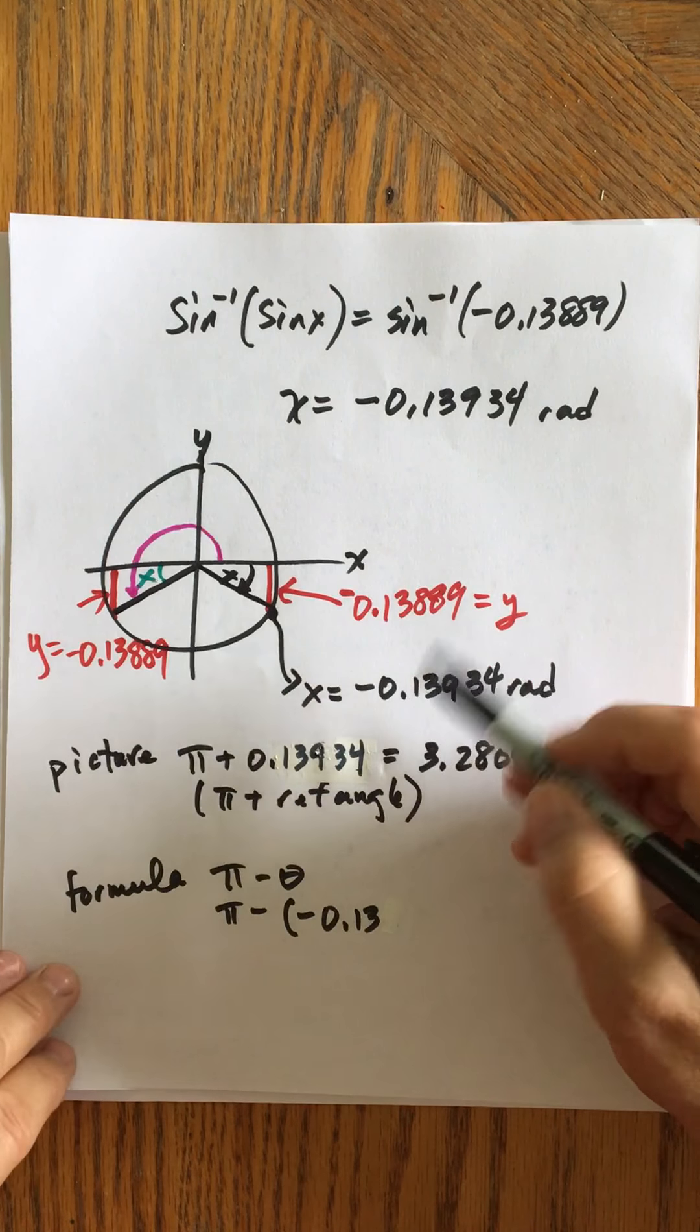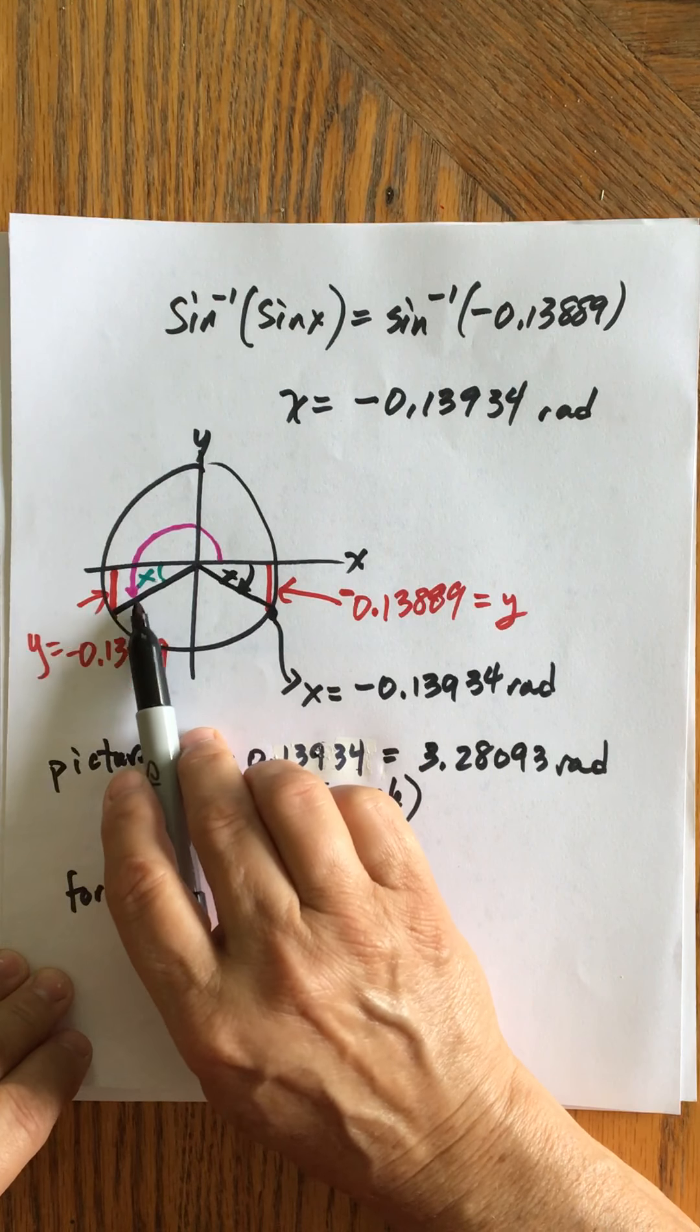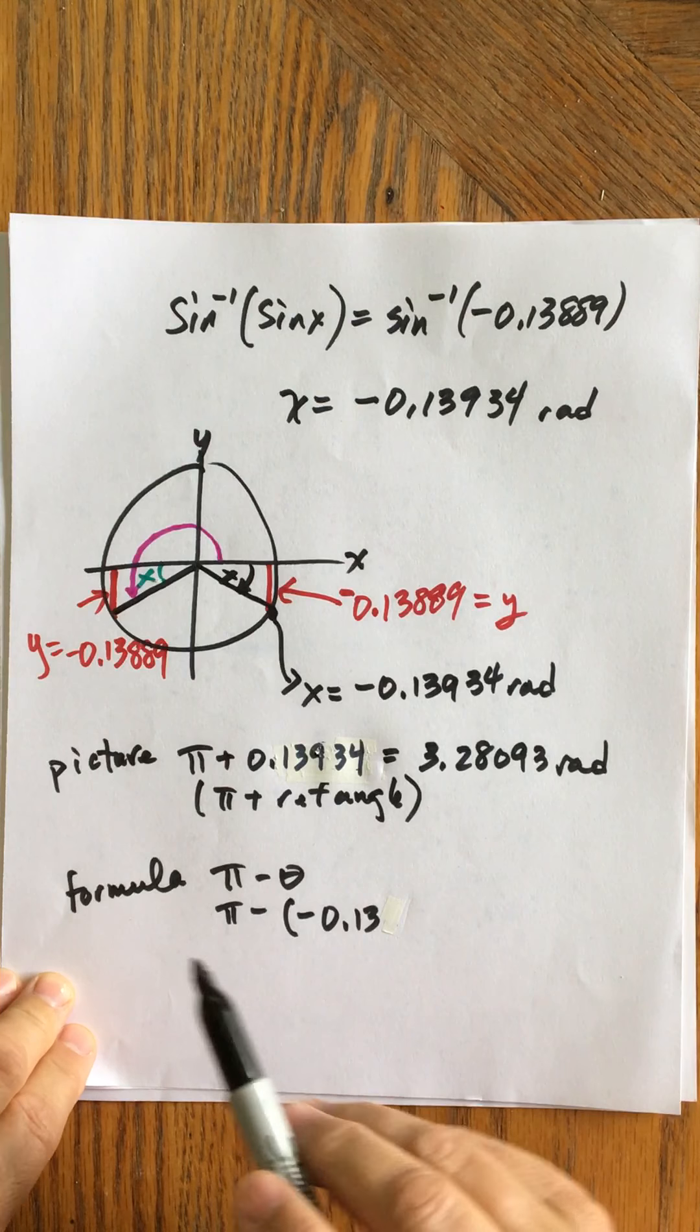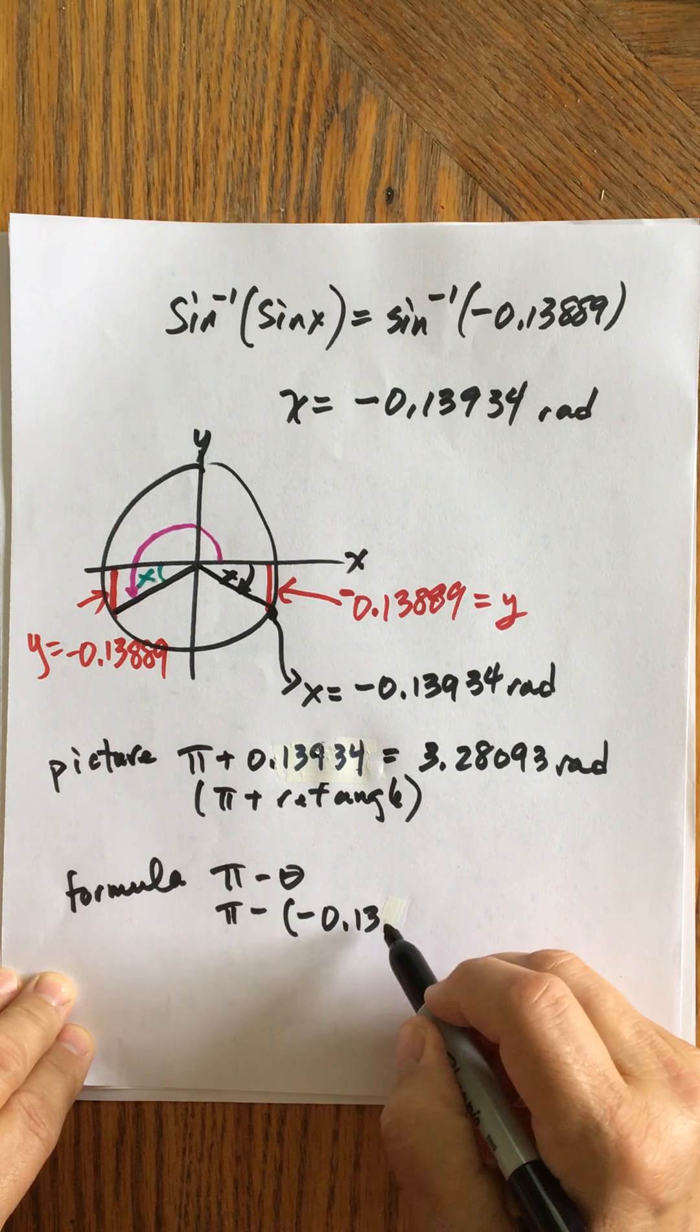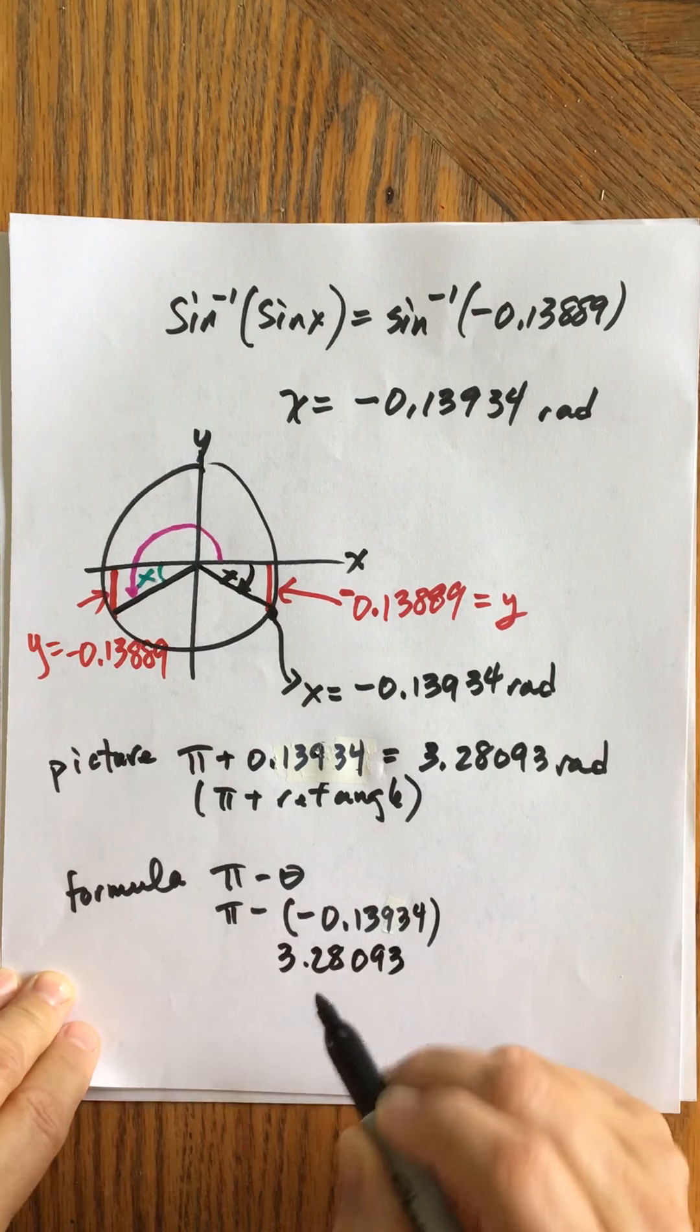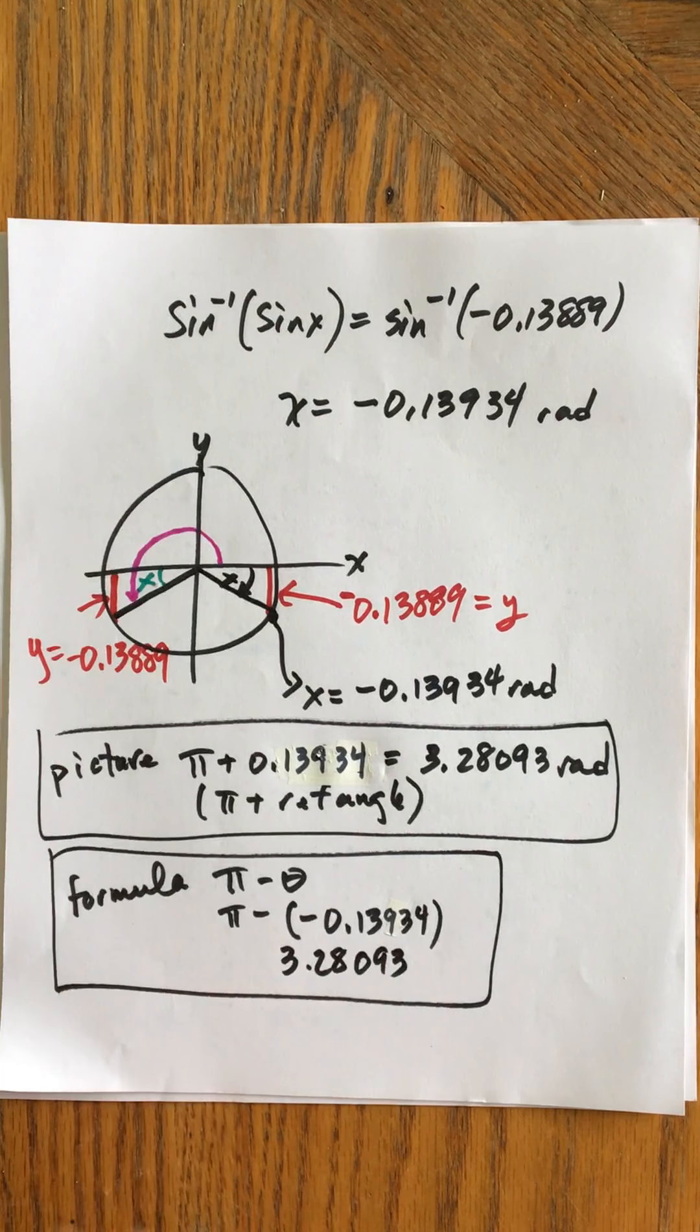Now, notice, these are very similar, aren't they? Like I said, I'm going to explain why that is true at the end of the video. So you can find the second angle here by doing pi plus the reference angle for this, or if you do it by formula, you'd say it's pi minus whatever the calculator gave you, which is negative 0.13934, which, of course, is going to give you 3.28093. Either way, you're going to get the same result. I tend to not memorize, so I just look at the picture. But if you want a formula, there it is.